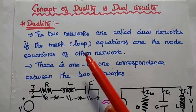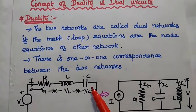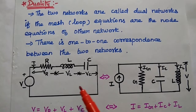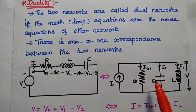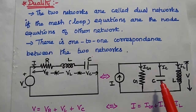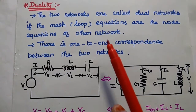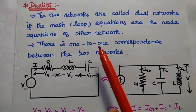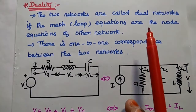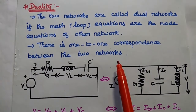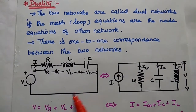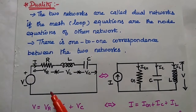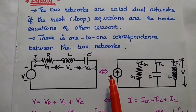Here we can consider two networks as dual networks only when the mesh equations of one network are the same as the node equations of the other network. So, the two networks are called dual networks if the mesh equations of one network are the node equations of the other network. In this circuit, these two are the dual networks, and there is a one-to-one correspondence between them.